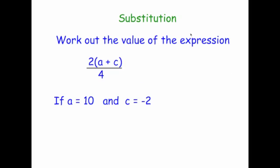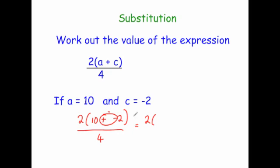Last exam question: work out the value of the expression 2 bracket a plus c, close brackets, all divided by 4, where a is equal to 10 and c is equal to minus 2. Substituting: 2 bracket 10 plus minus 2, close brackets, divided by 4. Plus and minus beside each other means take away, so that's 2 bracket 10 take away 2. 10 take away 2 is 8, so we have 2 times 8 divided by 4. 2 times 8 is 16, and 16 divided by 4 is equal to 4.